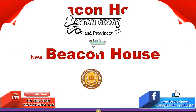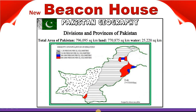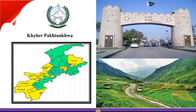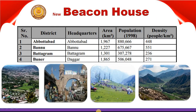Bismillahirrahmanirrahim, Assalamu Alaikum. Today we will discuss Pakistani province Khyber Pakhtunkhwa's geography, its cities, districts, headquarter areas, and population according to 1998. The first district of Khyber Pakhtunkhwa is Abbottabad. Its headquarter is also in Abbottabad. Its area is 1,967 km² and its population according to 1998 is 880,666, with a density of 448 people per km².